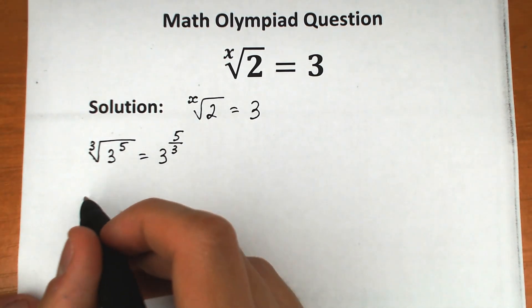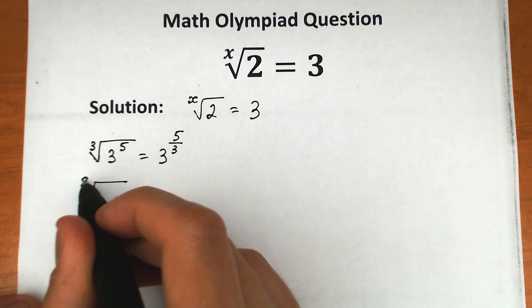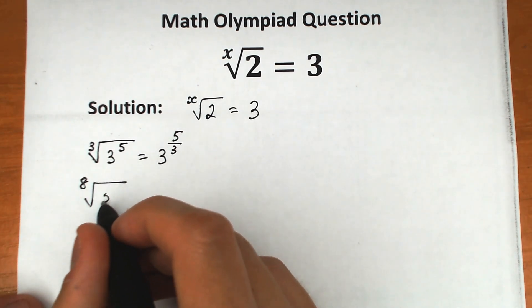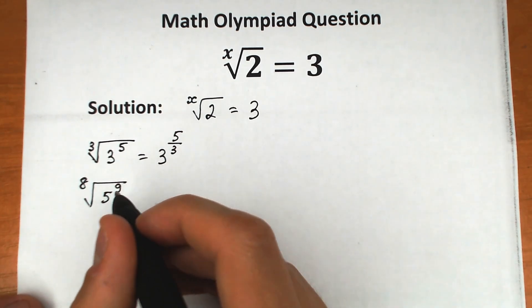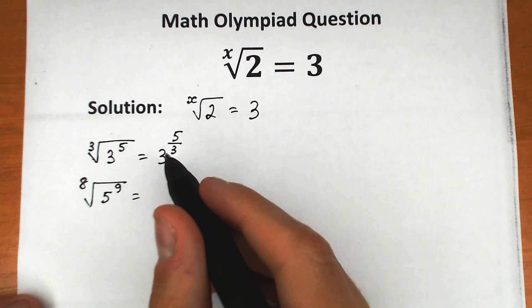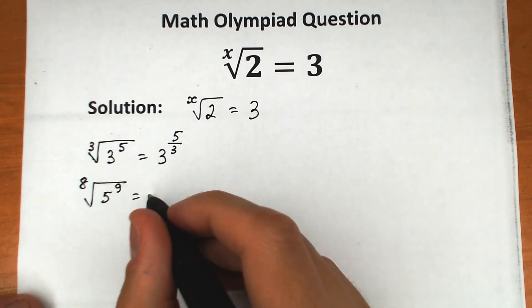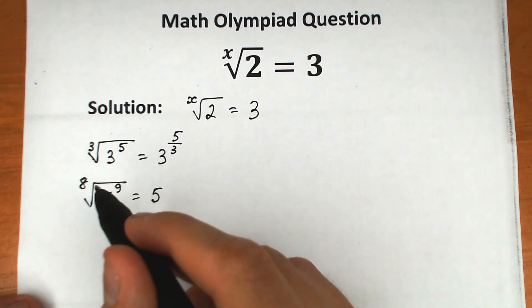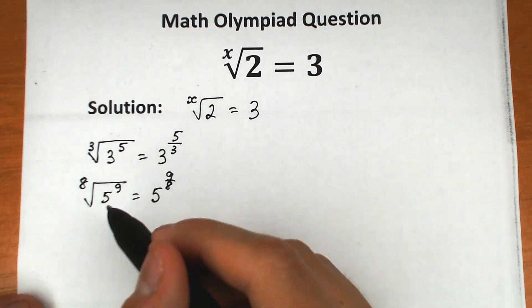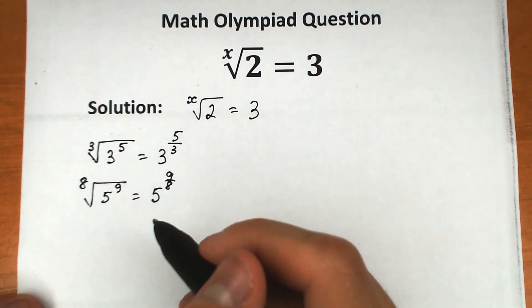Another example: the 8th root of 5 to the power of 9. We can write this according to the same logic as 5 to the power of 9 over 8. We hope you understand this step. This is a common thing, a general rule that we hope you know.